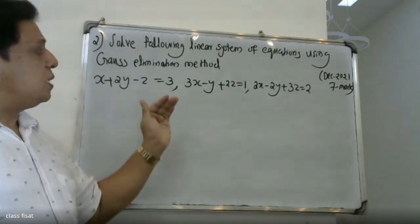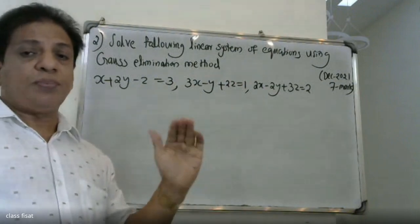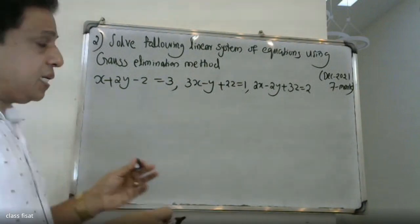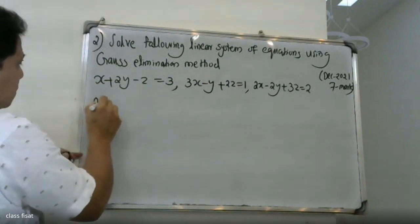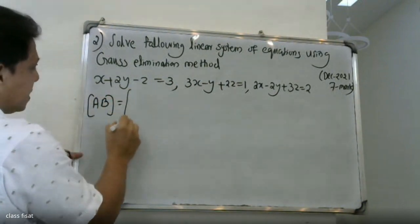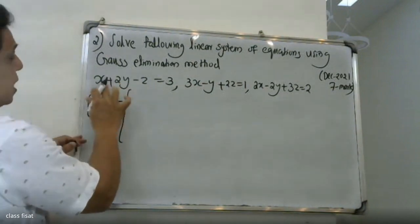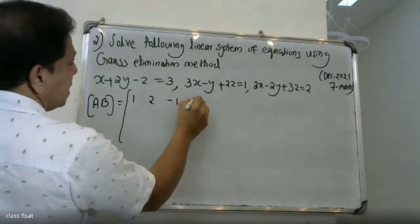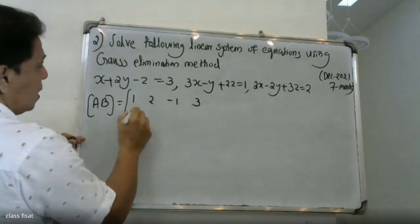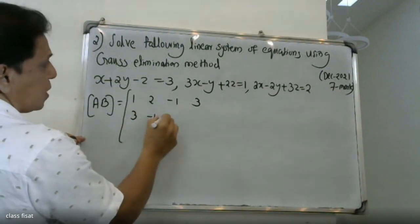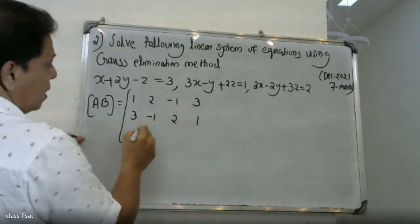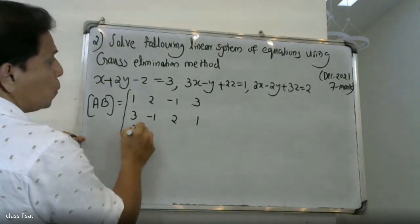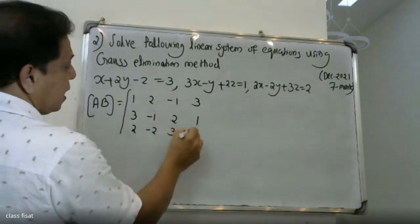Now, let me set up the augmented matrix. The number of equations is three. First row: 1, 2, minus 1, then 3. Second equation: 3, minus 1, 2, then 1. Third equation: 2, minus 2, 3, then 2.